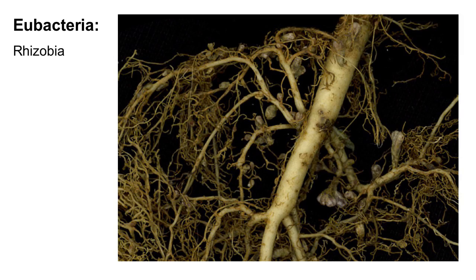Prokaryotes play important roles in ecosystems — for example, as decomposers of dead organic matter, be it inside the soil or inside the digestive tracts of animals. Some bacteria, called rhizobia, are capable of fixing nitrogen and live in mutualistic relationships with a certain group of plants, the legumes. The plants form root nodules in which the rhizobia live.